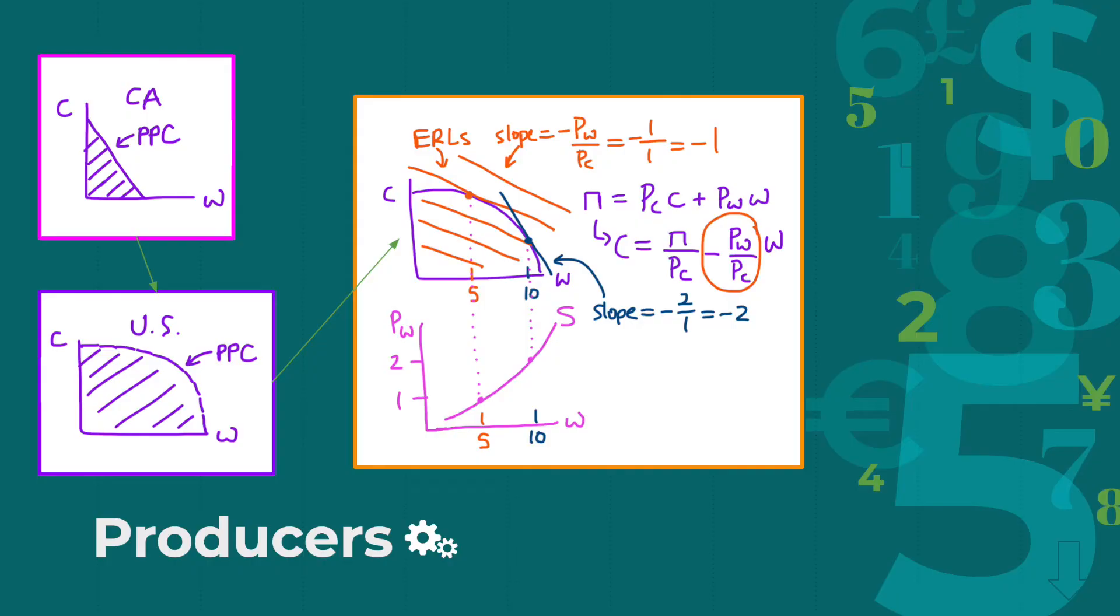Let's start with a graph on the producer side. Let's say we're looking at the state of California as a whole, and let's say that California produces two main goods, corn and wheat. Given California's limited resources, it can produce certain combinations of corn and wheat, represented by the dashed filling, and it cannot go above a certain amount.